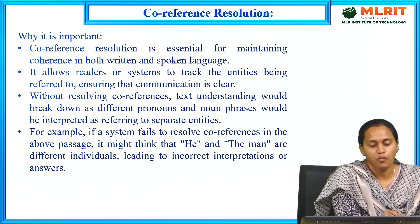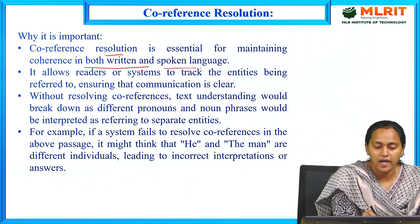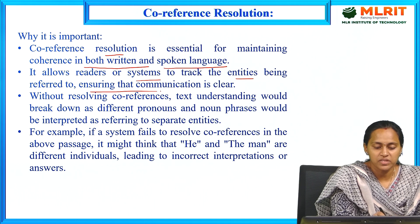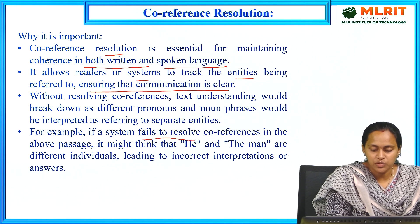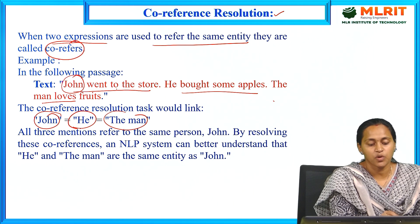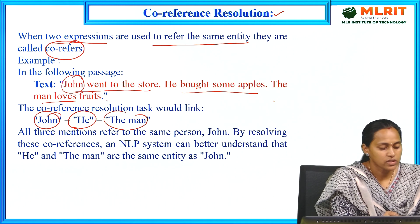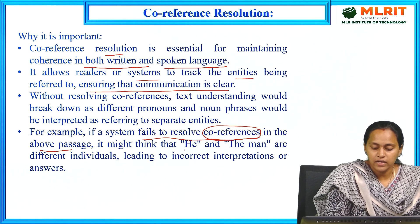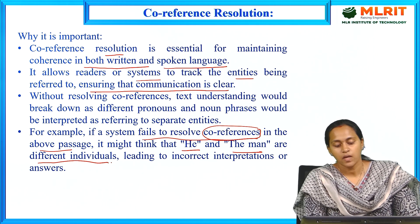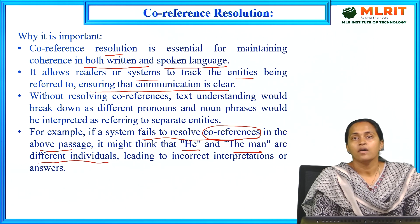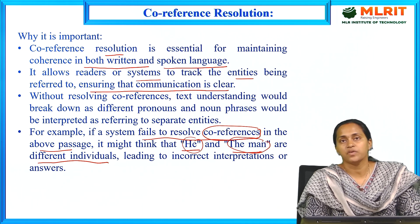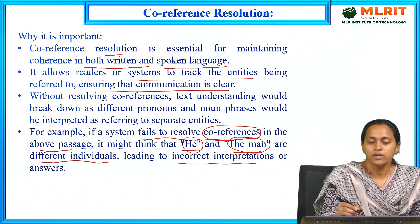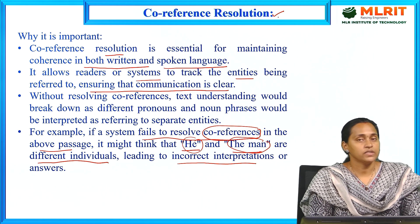Coreference resolution is important because it is essential for maintaining clarity in both written and spoken language. It allows readers or systems to track entities and ensure communication is clear. If a system fails to resolve coreferences — for instance, in 'John went to the store. He bought some apples. The man loves fruits' — it might treat 'he' and 'the man' as different individuals, leading to incorrect interpretations. This is why coreference resolution is very important in discourse processing.